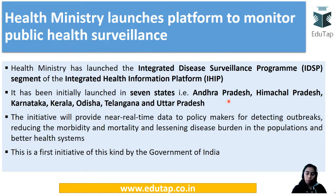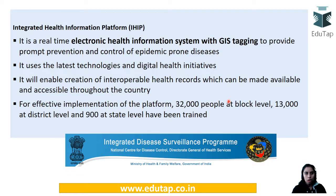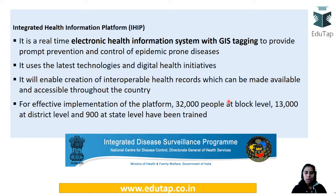This is a first-of-its-kind initiative expected to bring significant change to the health sector in India. IHIP is a real-time electronic health information system using digital technologies. It enables creation of interoperable health records at block, district, and state levels, integrating all the data. The seven states covered are important to remember, and any expansion will also be noted.